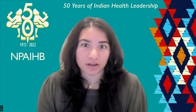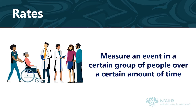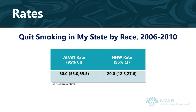Rates and rate ratios are commonly used to compare one group to another. Rates measure an event in a certain group of people over a certain amount of time. For example, the chart below describes the rates of people who quit smoking in my state by race from 2006 through 2010. Note that NHW is an abbreviation for non-Hispanic white. As you can see, 60% of the people who stopped smoking in my state from 2006 through 2010 were native, and 20% were white.